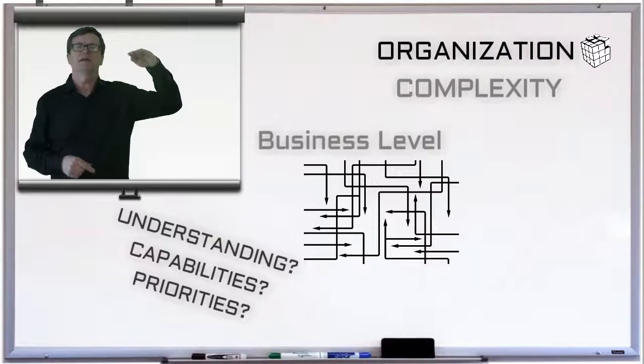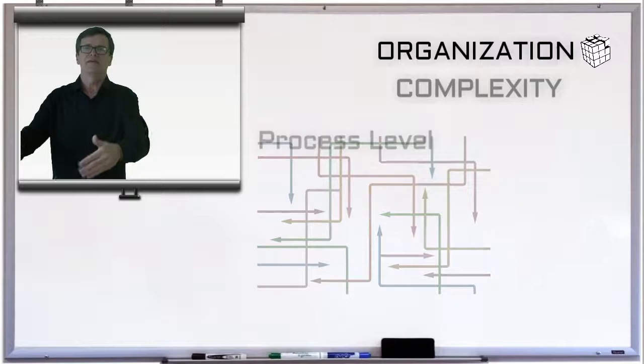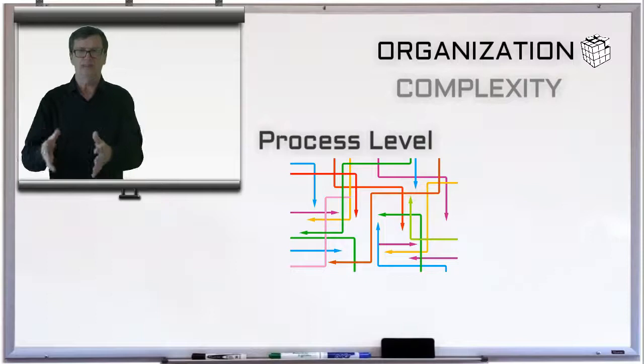But complexity can also occur at the process level of a business. And by the process level, we mean all those processes which help the organization to be effective and efficient.